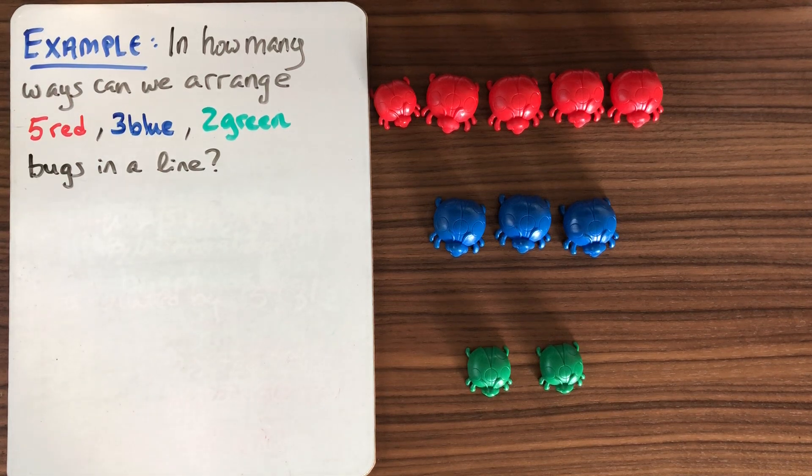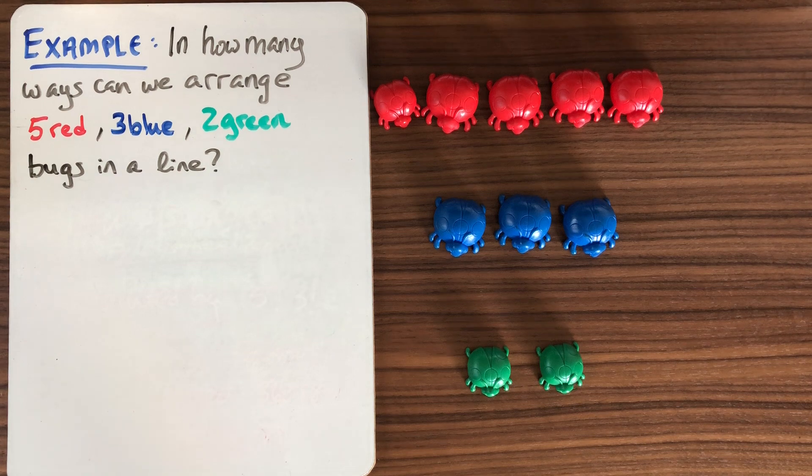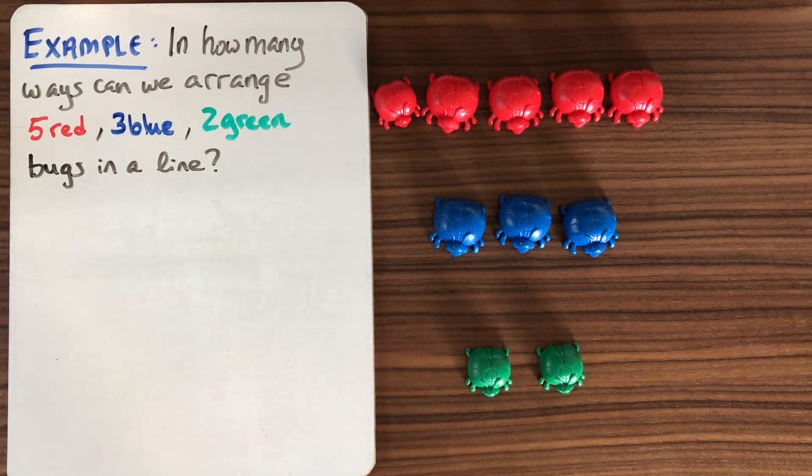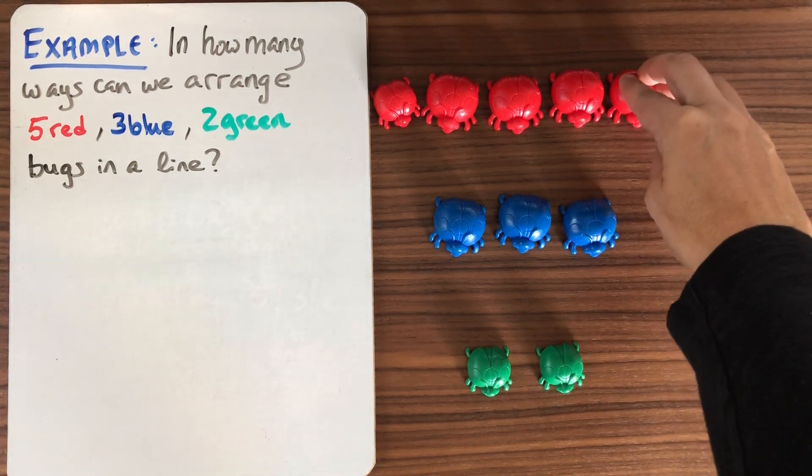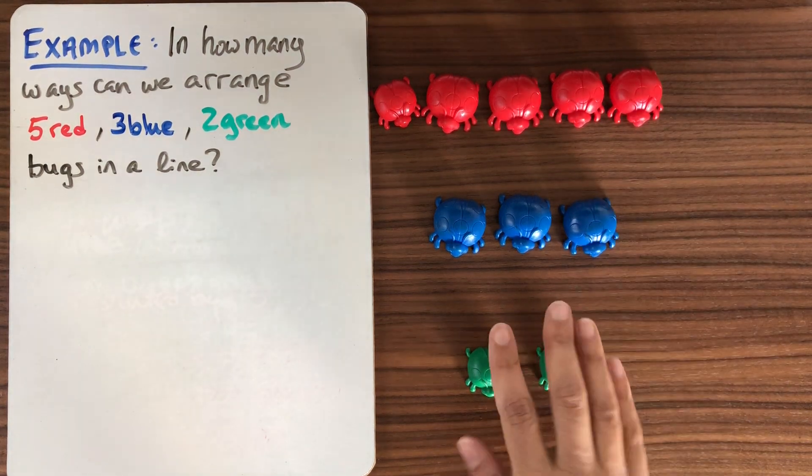To wrap up our conversation about linear orders, we're going to consider the case when we have some repetition. Here's the example. In how many ways can we arrange these bugs? Here we have 5 that are red, 3 that are blue, and 2 that are green.